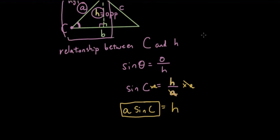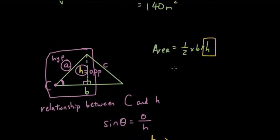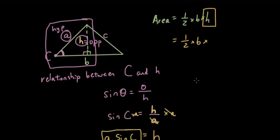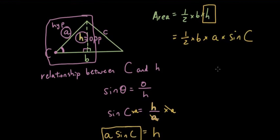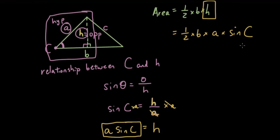So now notice I can simply substitute this new expression we have for h into this formula, and I will have half times b times a times sine C, which is exactly the same as the area of a triangle formula.